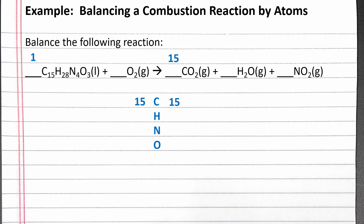We have 28 hydrogen on the left right now. We can put a 14 in front of H2O to get 28 hydrogen on the right. We have 4 nitrogen on the left right now. We can put a 4 in front of NO2 to get 4 nitrogen on the right.